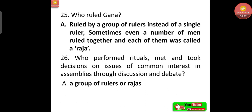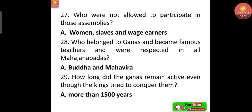The Gana was ruled by a group of rulers instead of a single ruler. Sometimes a number of men ruled together and each was called a Raja. They performed rituals, met, and took decisions on issues of common interest in assemblies through discussion and debate. Women, slaves, and wage earners were not allowed to participate in those assemblies.